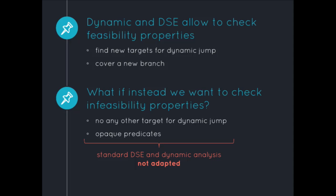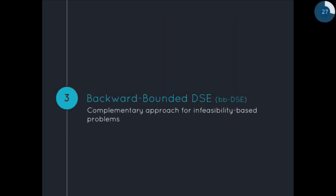We have dynamic symbolic execution that allows finding new targets for dynamic jumps and covering new branches. But what if instead we want to check infeasibility properties — like making sure a ret instruction always returns to the call instruction, or for opaque predicates, checking that we always take one of the two branches? The standard forward DSE is not well-adapted for such problems. That's why we propose a new approach: the backward bounded DSE.